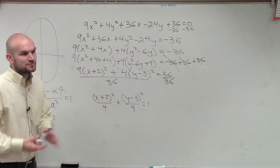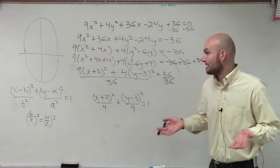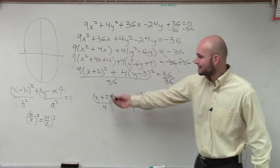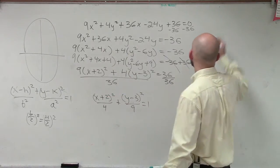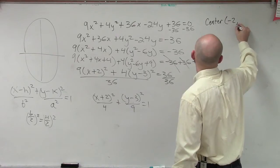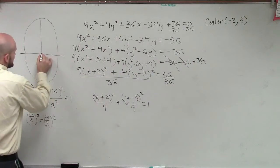Now let's use what we know. The center is h, k - opposite of h, opposite of k. So in this case, our center is going to be (-2, 3). So we have our center, it's at (-2, 3).